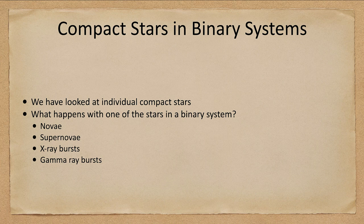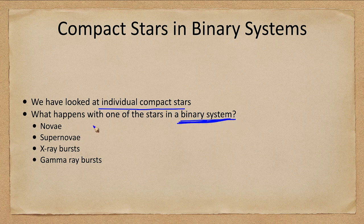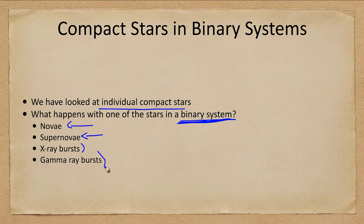We've looked at the individual stars, but what happens when one of these is in a binary system? Now these are things that can happen — they don't mean they always will happen — but we will look at things like novae and supernovae, and then X-ray and gamma ray bursts as different things that can happen when compact stars have a companion star.